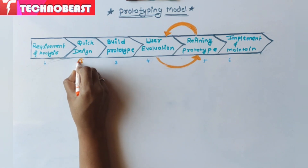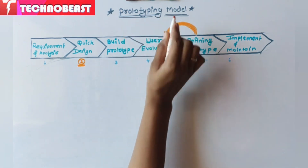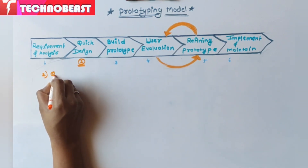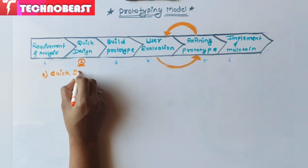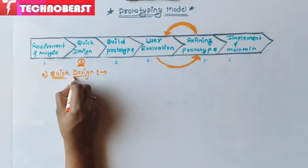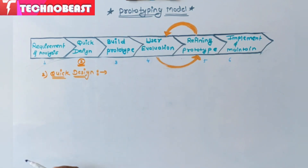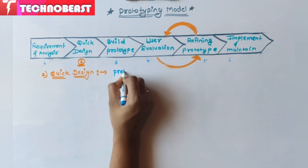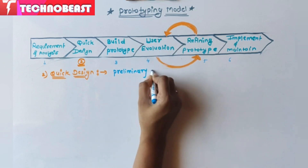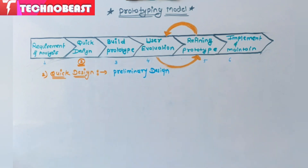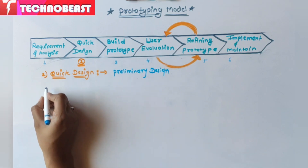Now we are going to the second phase of the prototyping model, which is quick designing. Let's see in detail about the quick design phase. This quick designing is also called preliminary design.